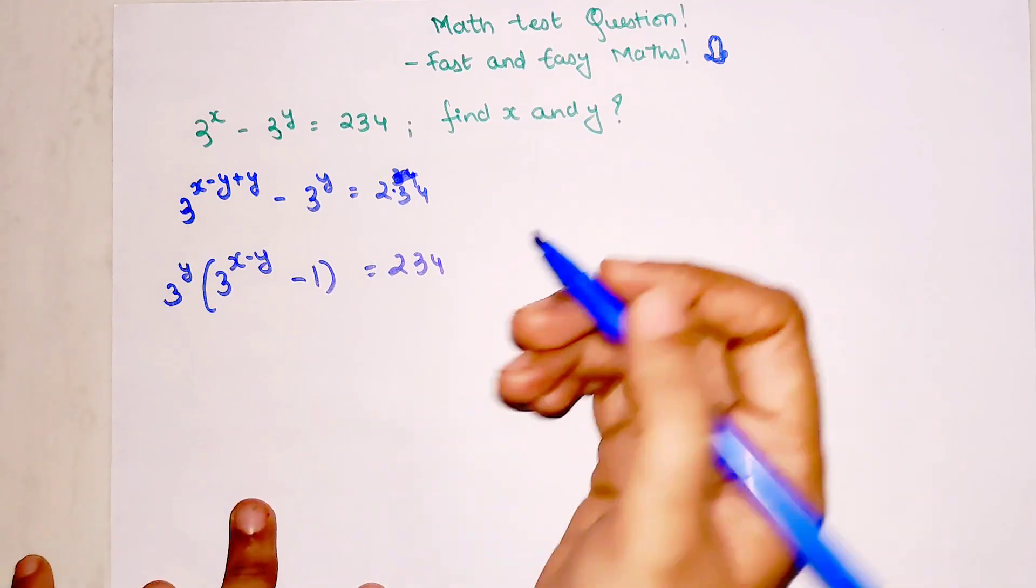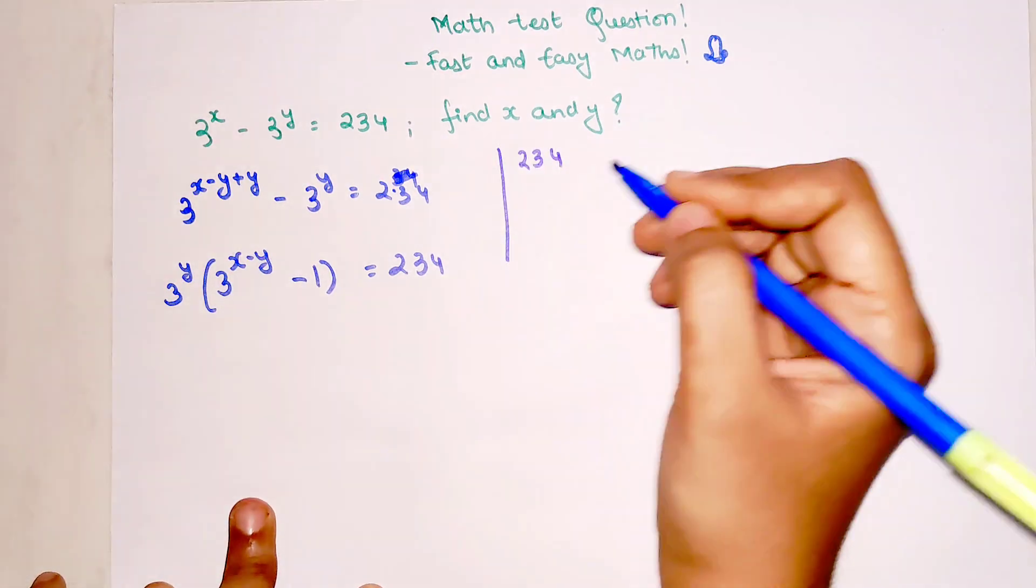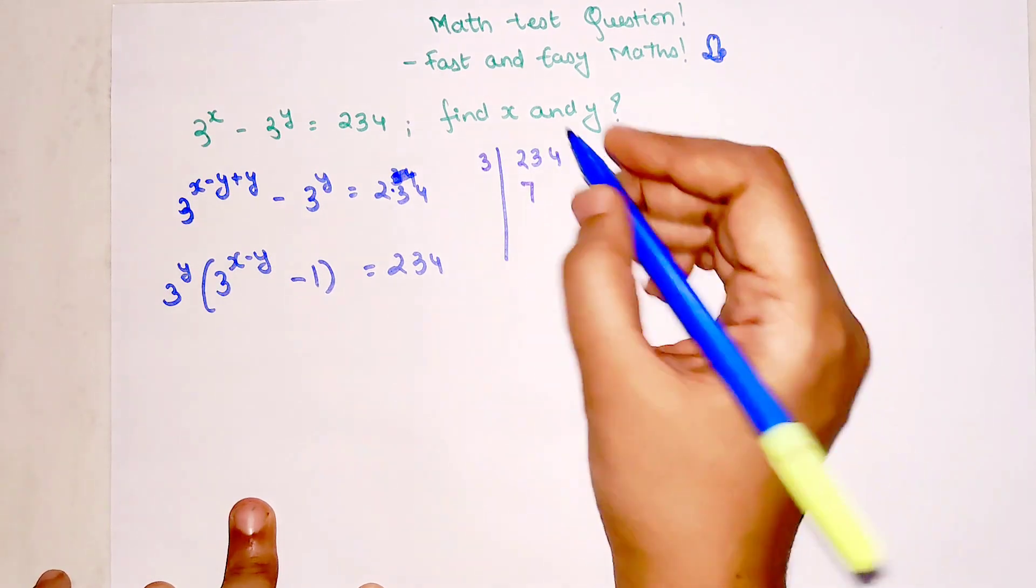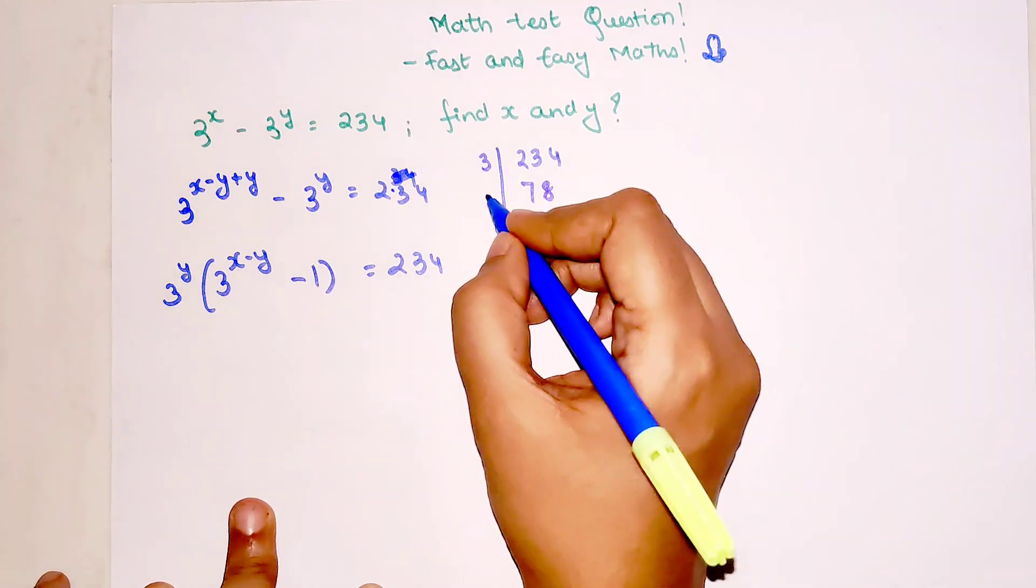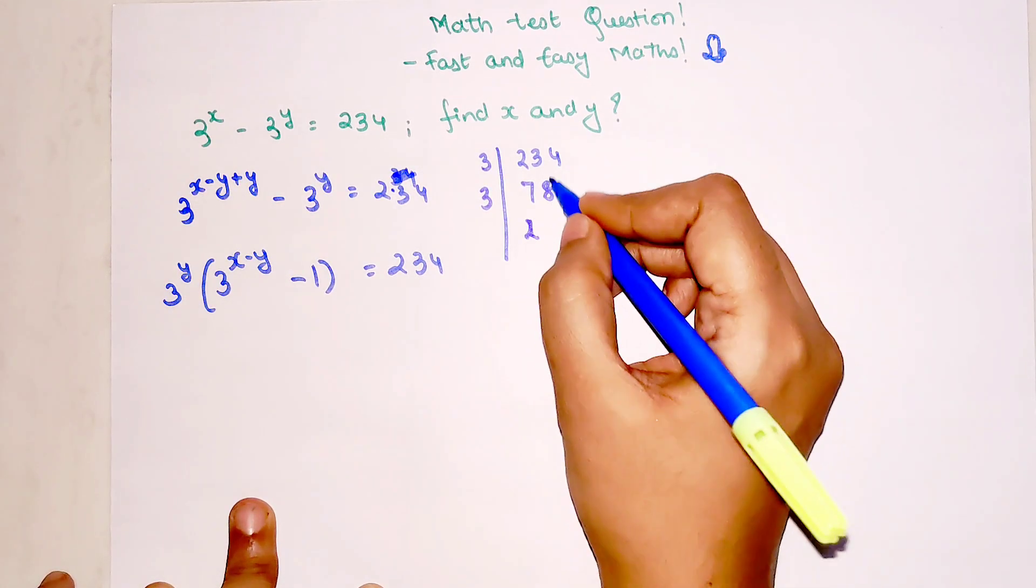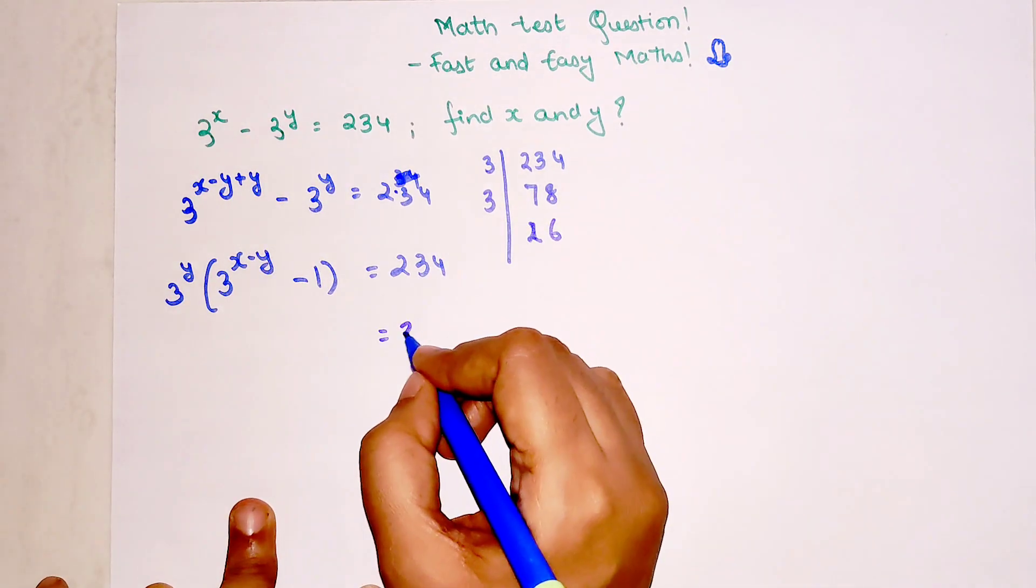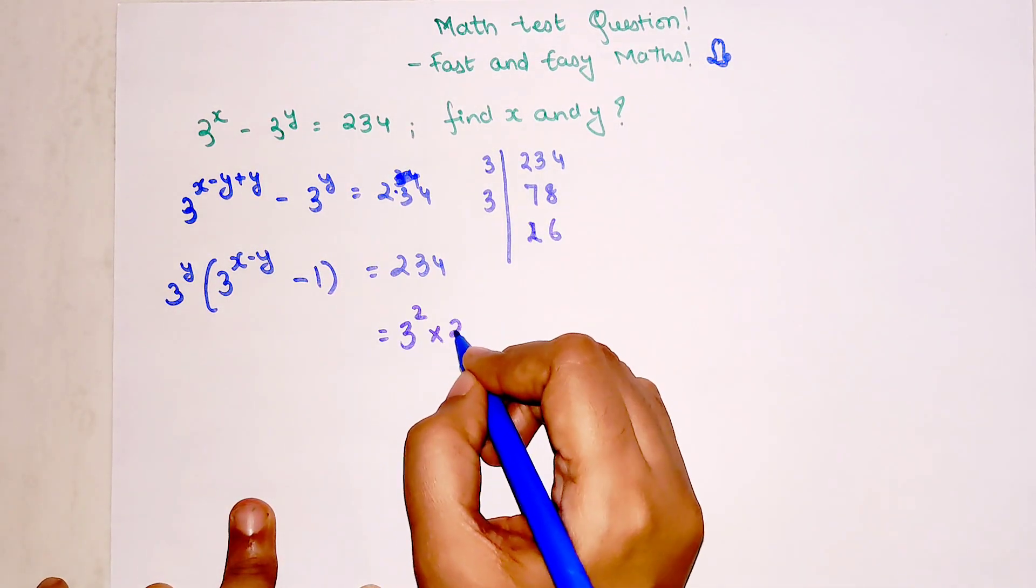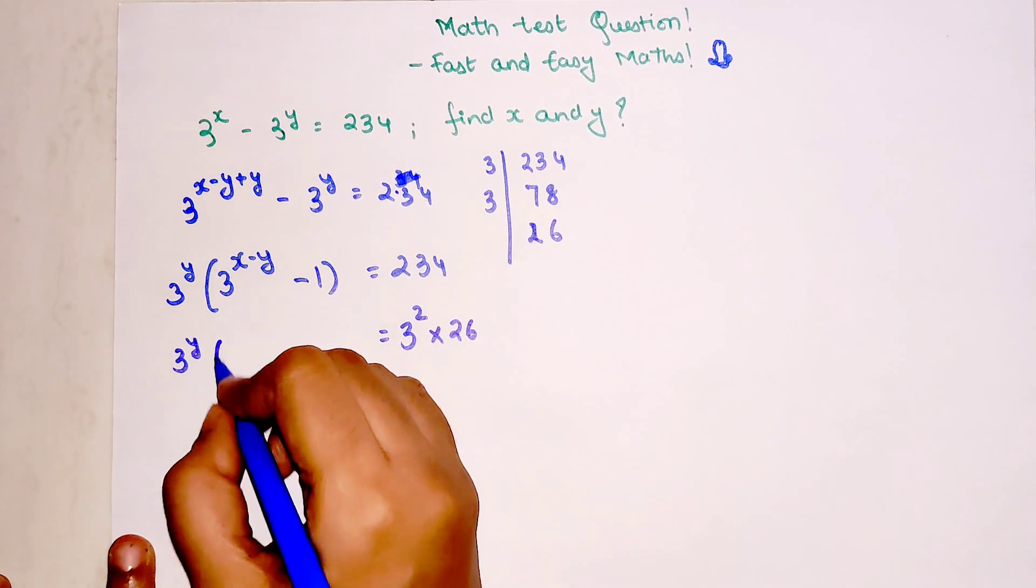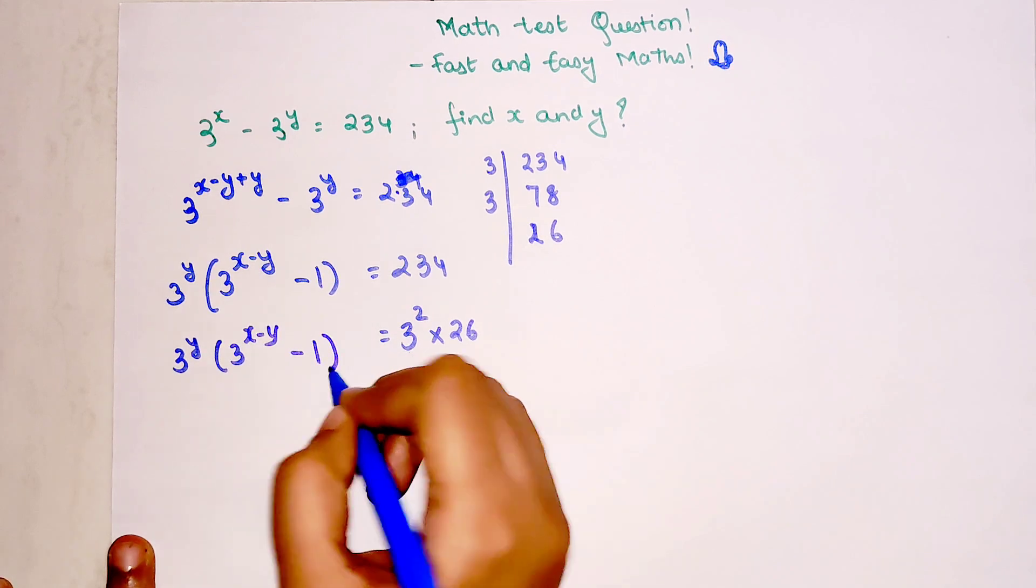If you have reached this particular step, then all you have to do is find the factors of 234. So 3 goes into 234 giving us 78, then 3 goes into 78 giving 26. So we have 234 which can be written as 3 squared times 26, and this equals 3 raised to y times 3 raised to x minus y minus 1.